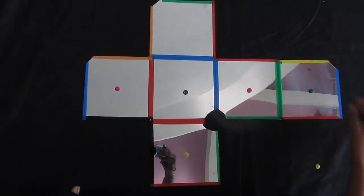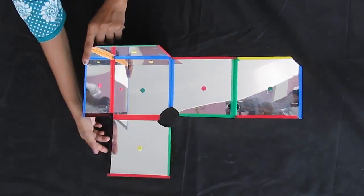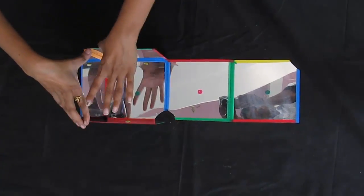When you arrange two mirrors at 90 degrees you can see three images. But when you have parallel mirrors as in this cube we get infinite images.